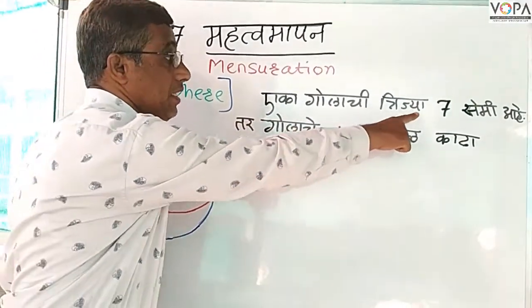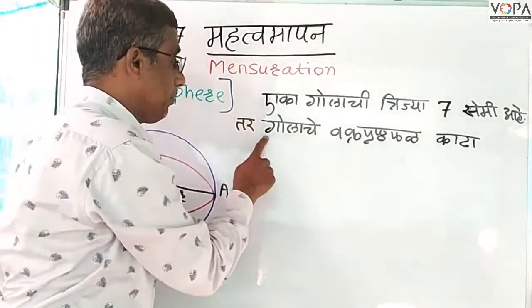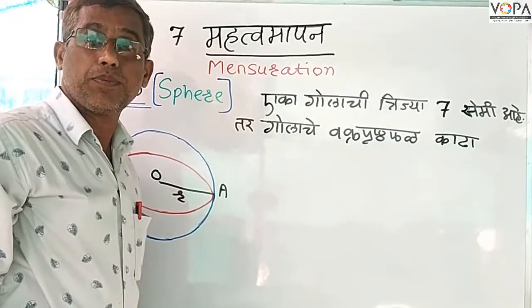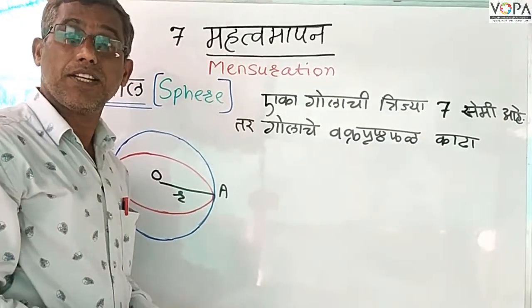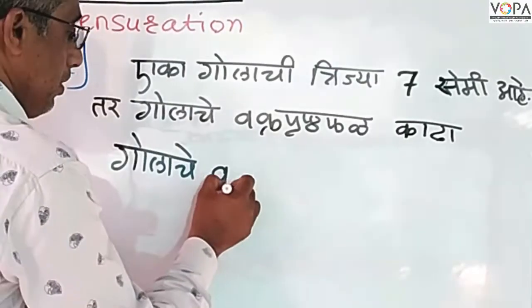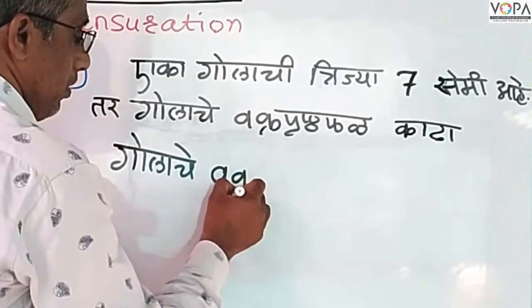It is about 7 cm. There is a 7 cm of a golden tree. So, the golden tree is a small tree. It's a small tree. The golden tree is a small tree.